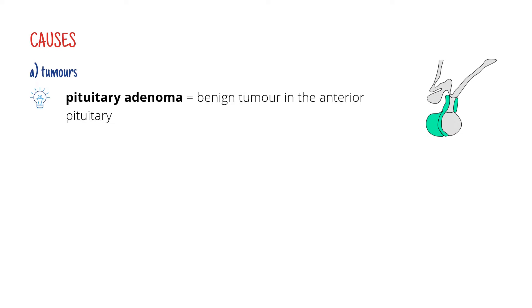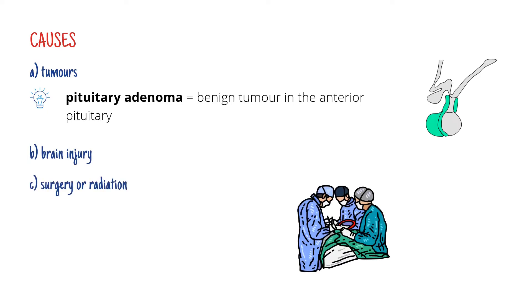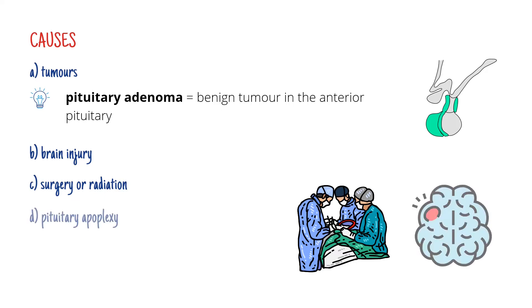So what could cause hypopituitarism? There could be a tumor which could damage the pituitary, for example a pituitary adenoma — a benign tumor in the anterior pituitary, typically found in adults, quite a common one. If you'd like to know more, check out our video on pituitary adenomas. Another possible cause could be brain injury, but also surgery or radiation. The pituitary could get damaged during surgical excision of a tumor or during radiation of the pituitary. Finally, there could be a pituitary apoplexy — a stroke with sudden bleeding into the pituitary gland, which is often quite severe.